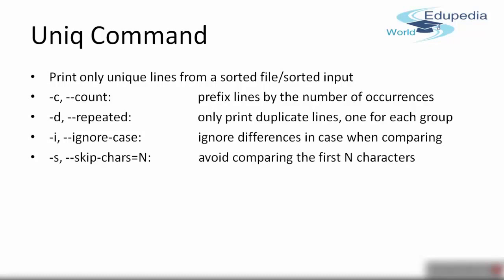You need a sorted input because uniq counts only consecutive lines. If a number 100 occurs consecutively twice it will trim one occurrence, but if 100 is followed by 200 and then 100 again, it will not detect the duplicate. So first sort the file using the sort command, then use uniq to print unique lines.